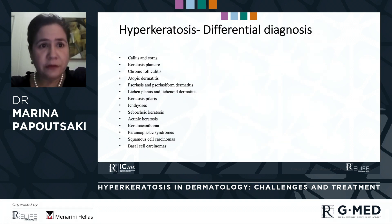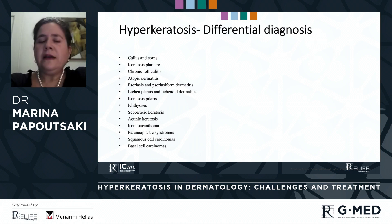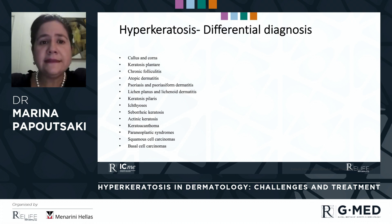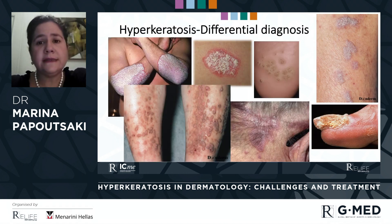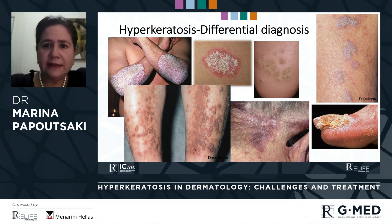Here we see a list of the most common ones. We find among them simple diseases like callus and corn, keratosis plantaris, chronic folliculitis, more complex inflammatory diseases like atopic dermatitis, psoriasis and psoriasiform dermatitis, lichen planus and lichenoid dermatitis, keratosis pilaris, ichthyosis, seborrheic keratosis, actinic keratosis, keratoacanthoma, paraneoplastic syndrome, and squamous and basal cell carcinoma. We all come to see in our daily clinical practice images that are the result of these different diseases and hyperkeratosis in the skin.